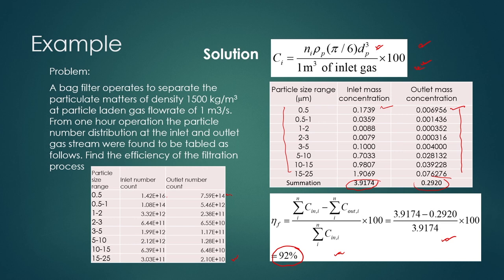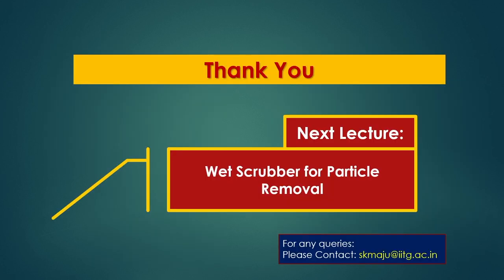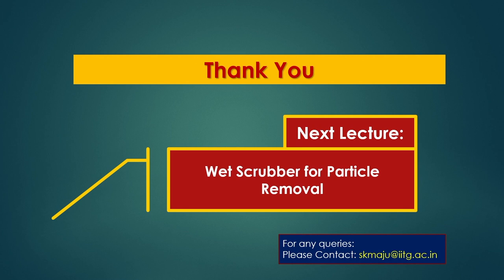In summary, we have discussed the mechanism of bag filtration, where it is used in industry, the different types of bag filters based on their design, the different design factors including the cleaning mechanism, how to calculate power consumption, air-to-cloth ratio, and filtration efficiency. In the next lecture, we will discuss another mechanism for particulate material separation — the wet scrubber for particle removal.